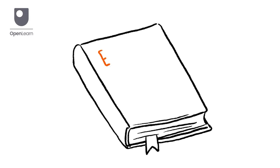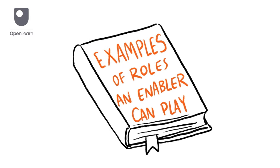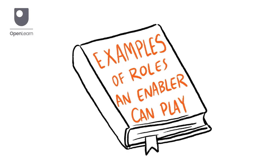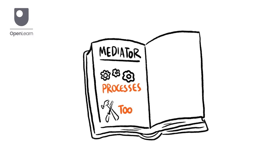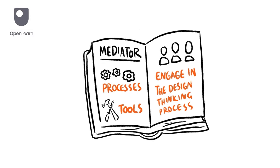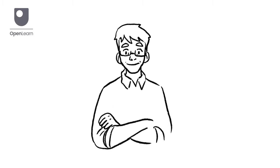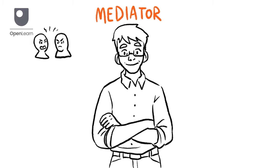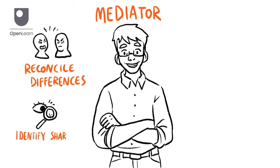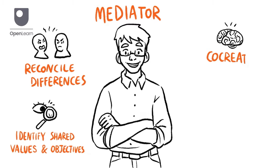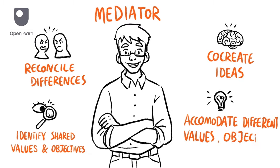Here are some examples of the roles an enabler can play at different times. The mediator devises processes and tools to help others engage in the design thinking process. The mediator uses different techniques to reconcile differences, identify shared values and objectives, co-create ideas, or find ways to accommodate differences.